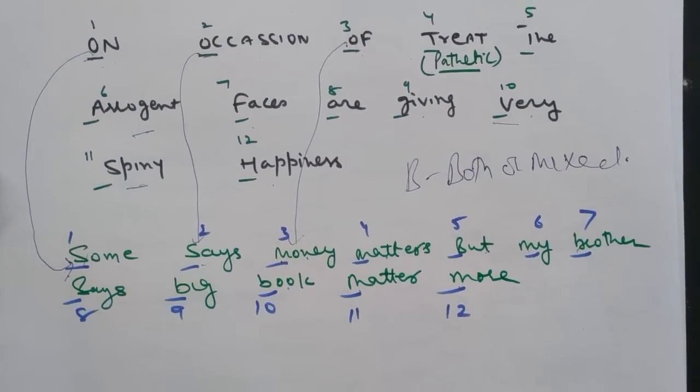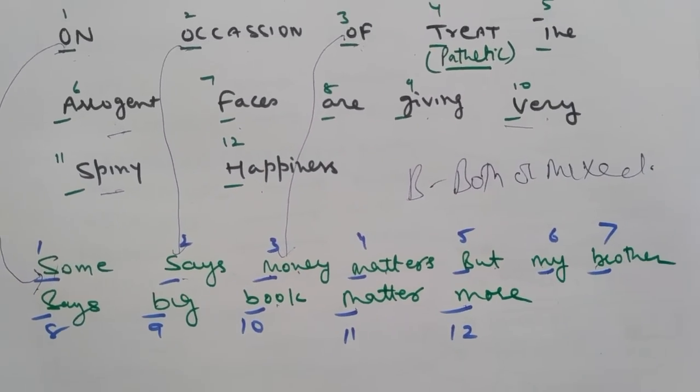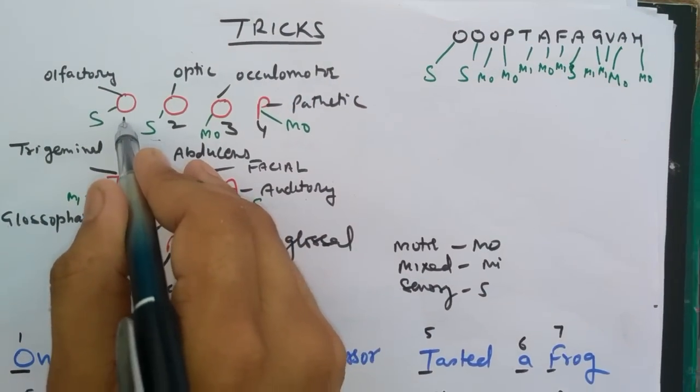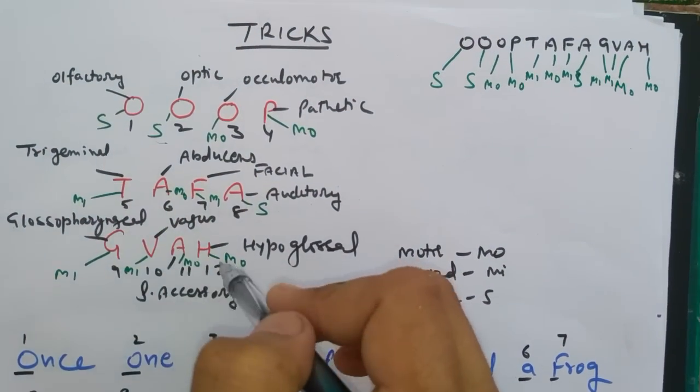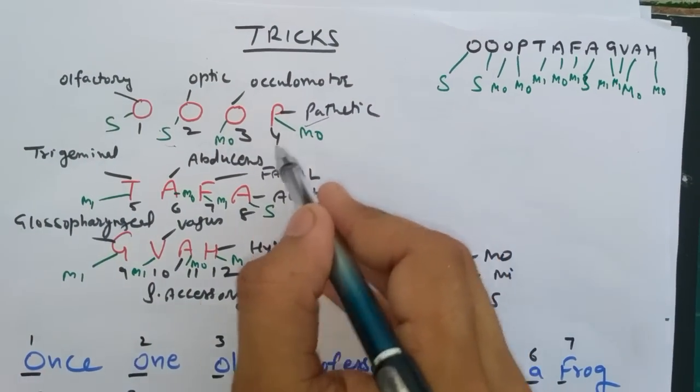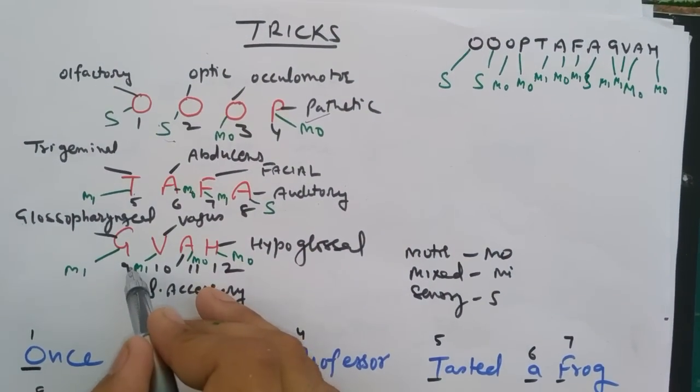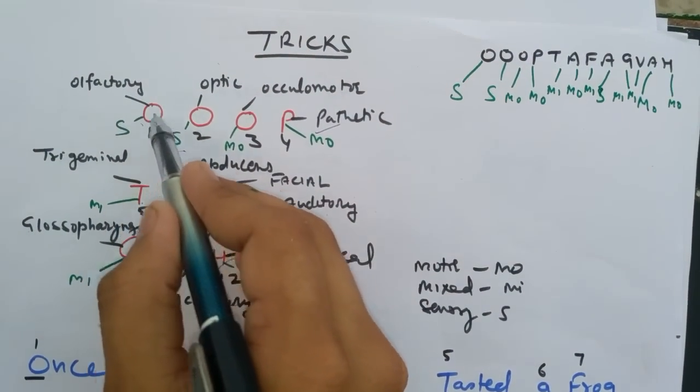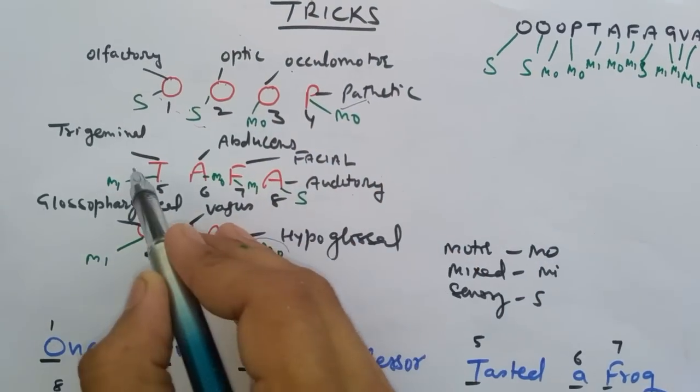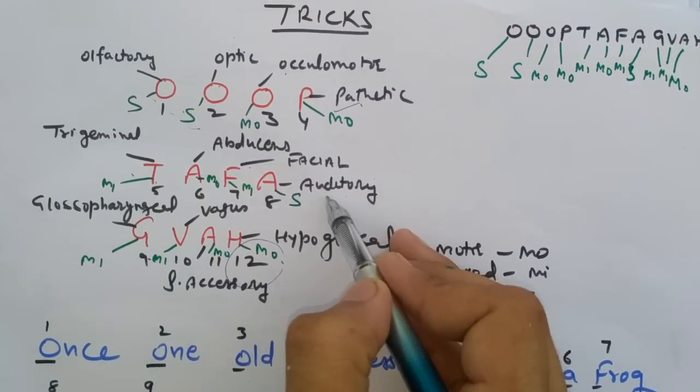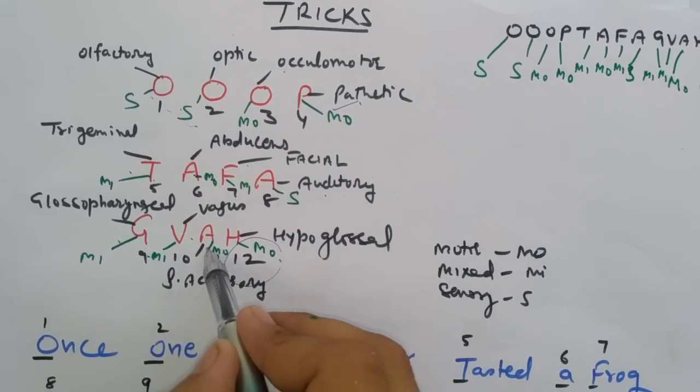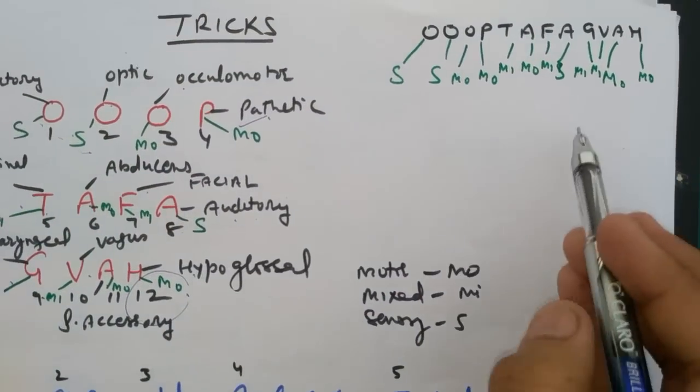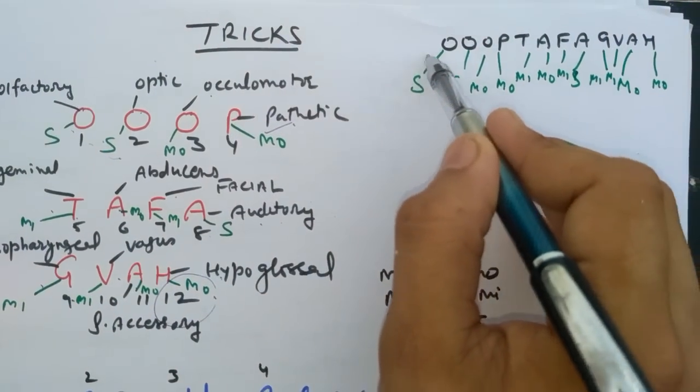The second trick is you have to write four-letter initials in three sets. First is OTOT, TAFA, GAVA. The names are: olfactory, optic, oculomotor, pathetic, trigeminal, abducens, facial, auditory, glossopharyngeal, vagus, spinal accessory, and hypoglossal. This is also an easy trick.